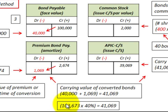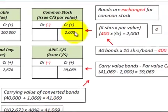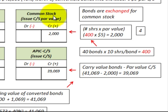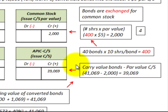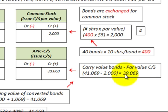That $41,069 is the same as the $102,673 total carrying value times 40%. For common stock in stockholders' equity, we increase that account by 400 shares times $5 par value, for $2,000. The balancing entry goes to additional paid-in capital for common stock, calculated as the carrying value of the bonds converted ($41,069) minus the par value of common stock issued ($2,000), giving $39,069.